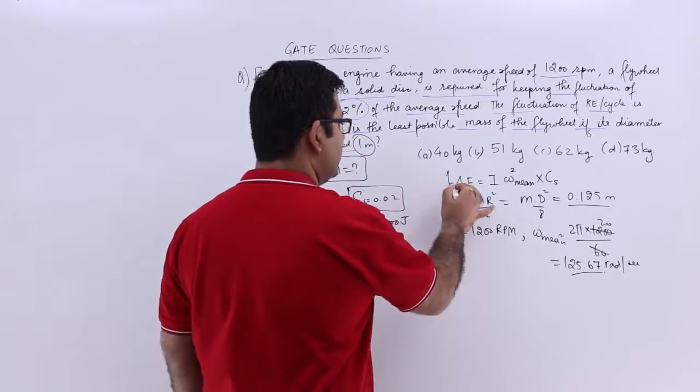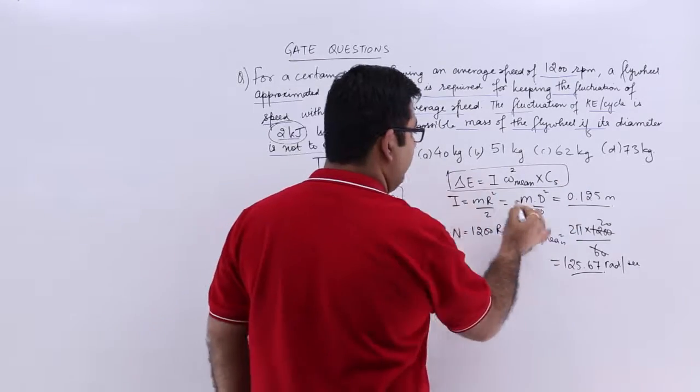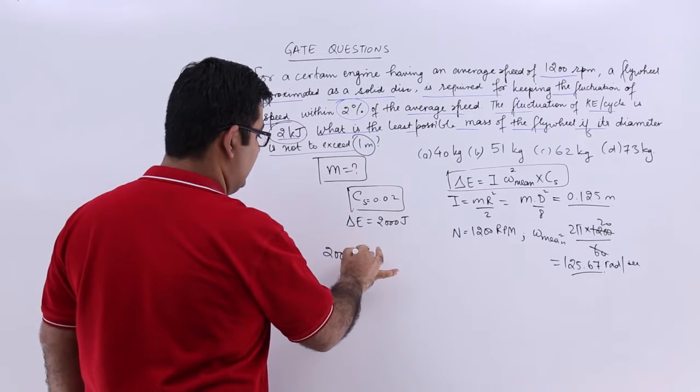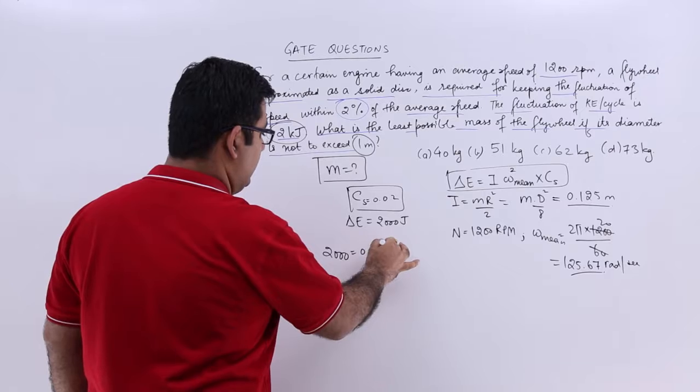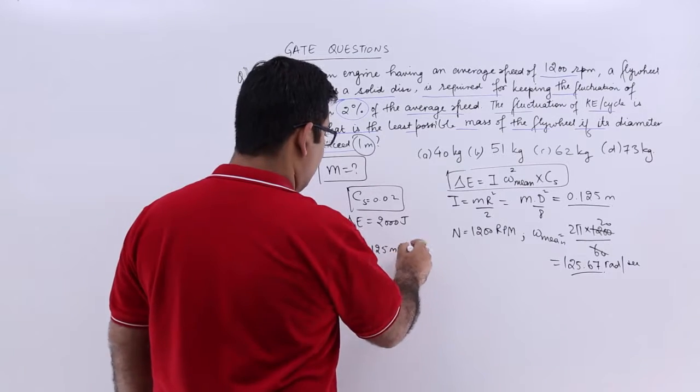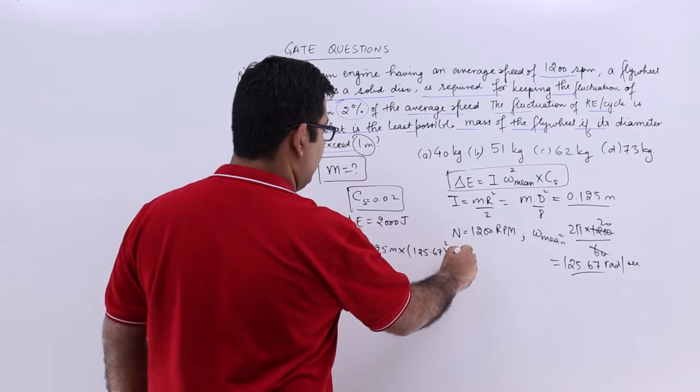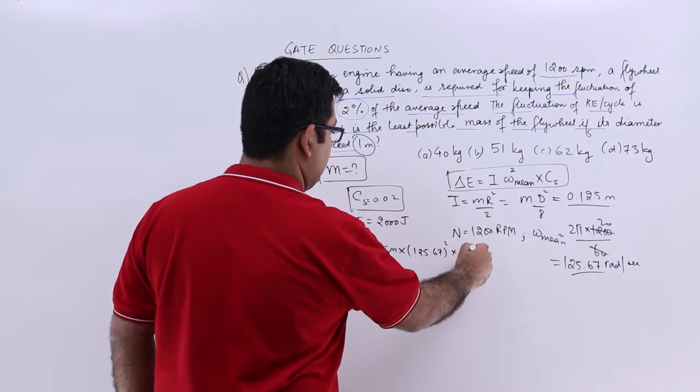Let's put all the values in this expression and get the value for M. So we will have 2000 is equal to 0.125 times M into 125.67 square into 0.02.